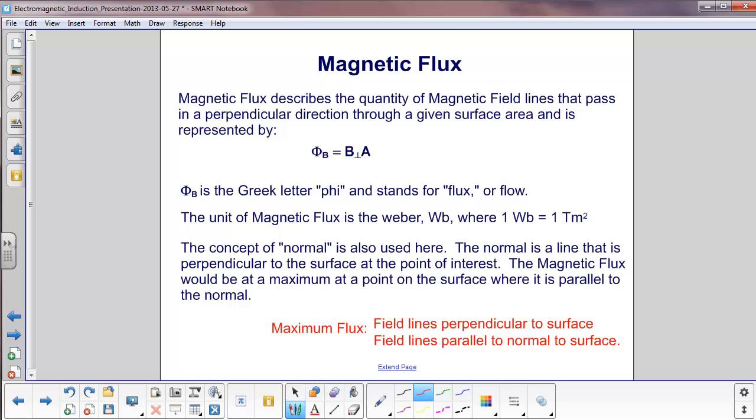Magnetic flux tells you how many magnetic field lines pass in a perpendicular direction through a given surface area. The field lines have to be perpendicular and go through a given surface area.